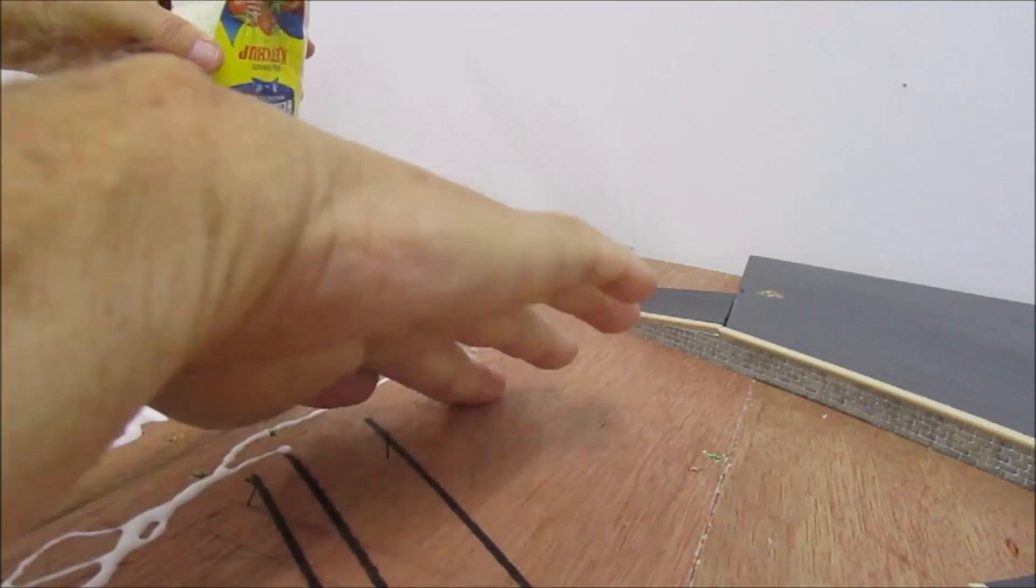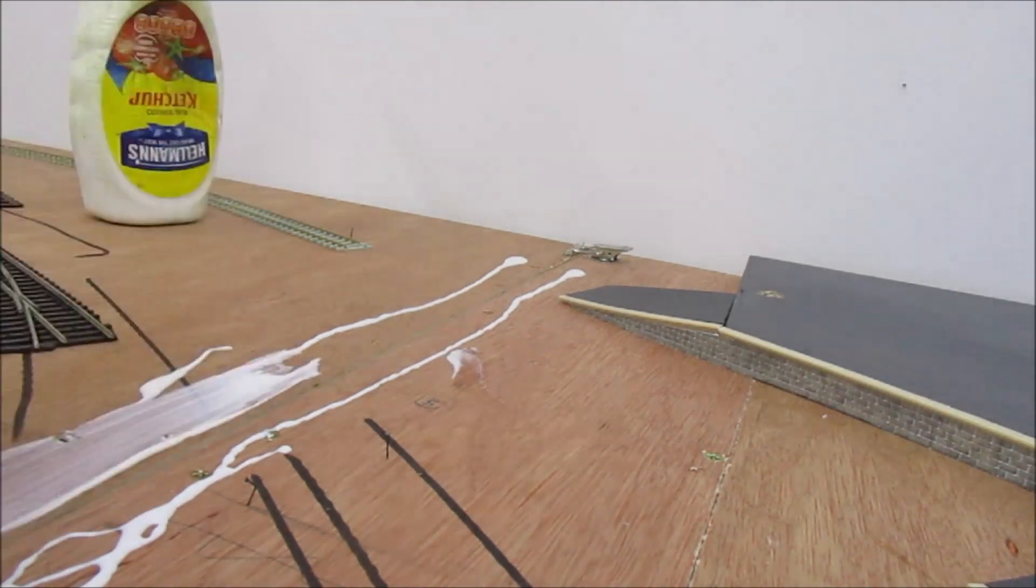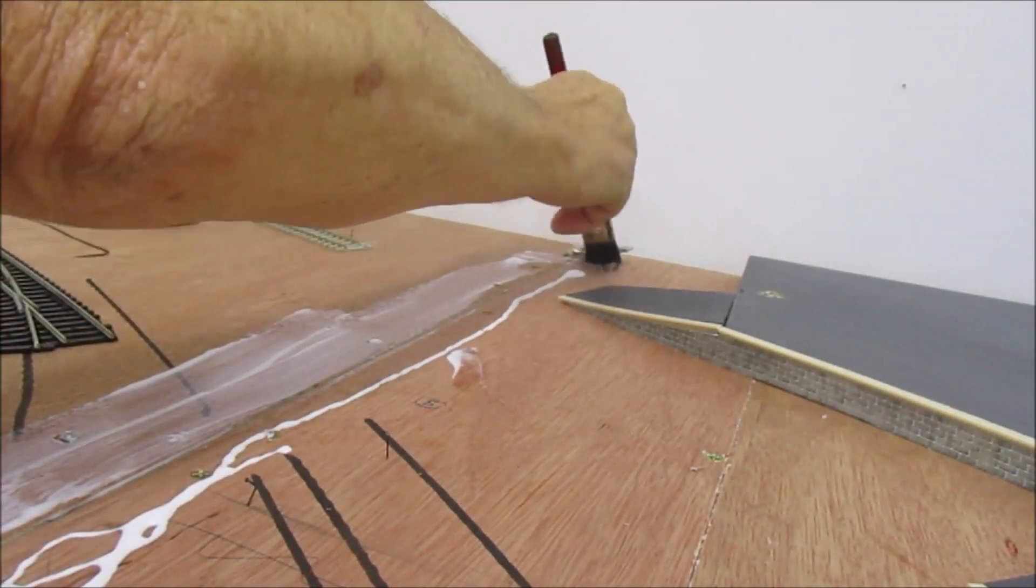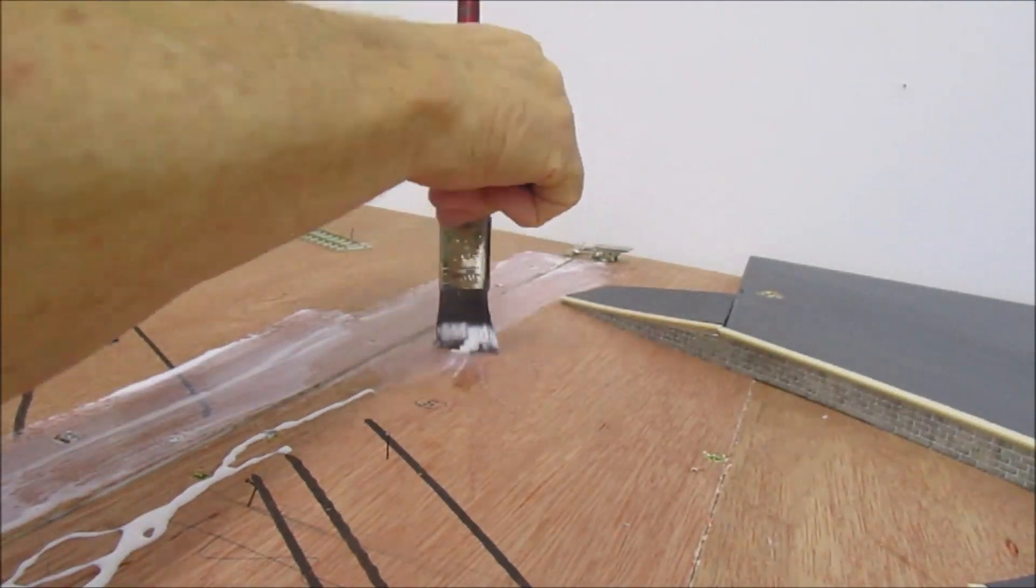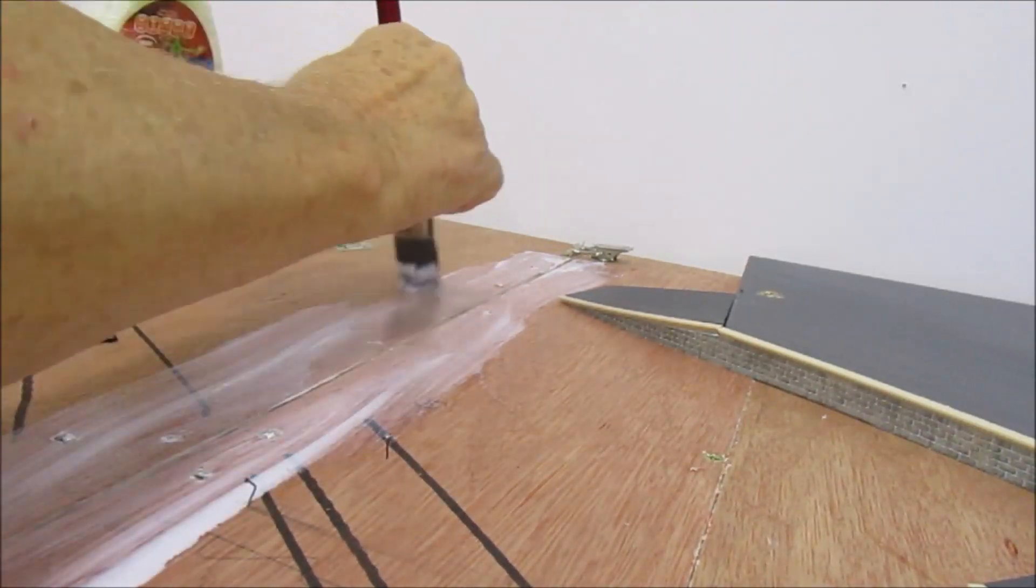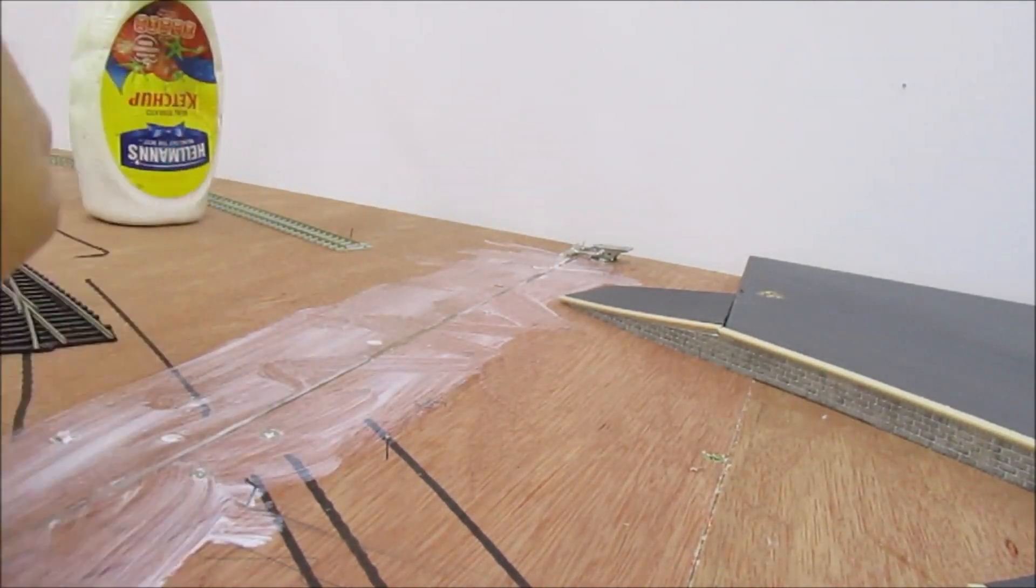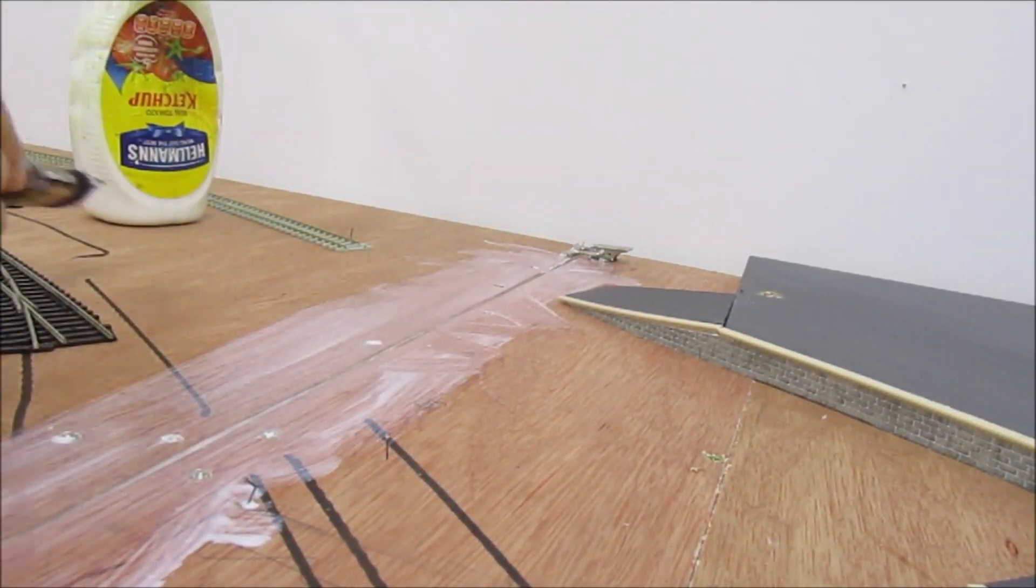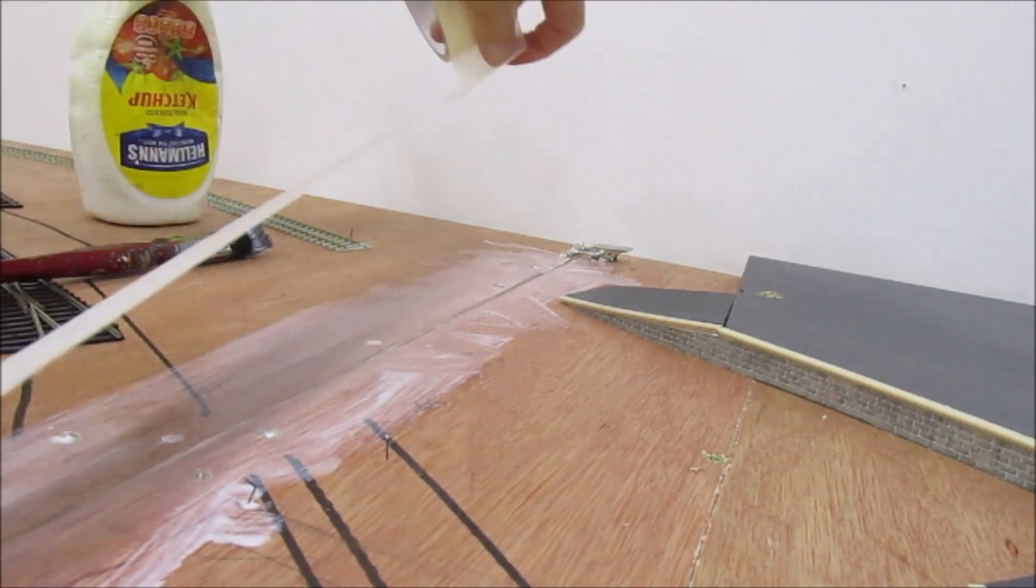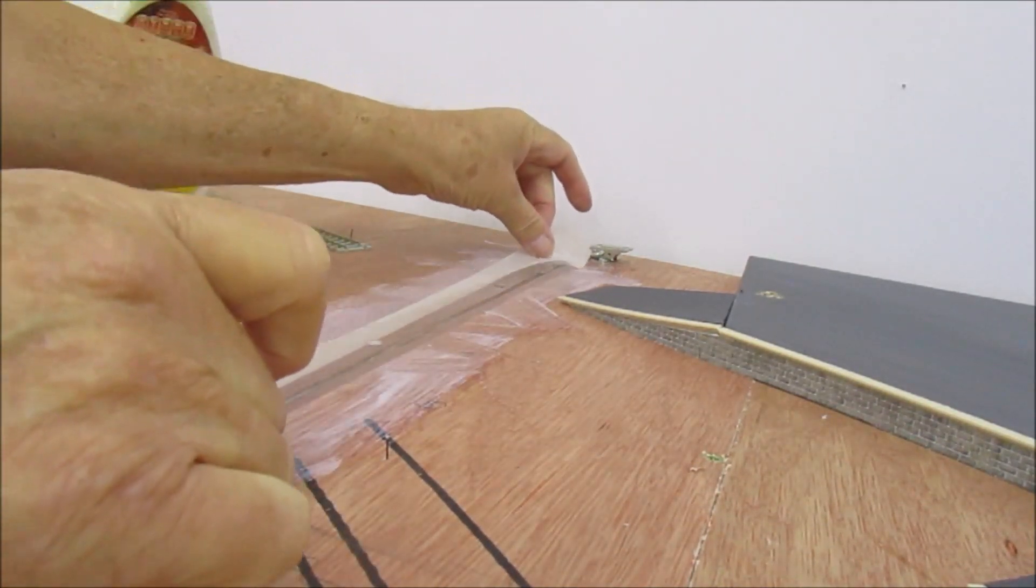Just run a bit of PVA along there, paint it in. Doesn't matter about over here because there'll be a building, hedgerow, foliage, something or other will go over there to hide that piece anyway, so that won't show. Just a liberal coating on there. Although the masking tape is sticking anyway, it just helps it to go hard once it's set. So we put that one over the center of the joint.